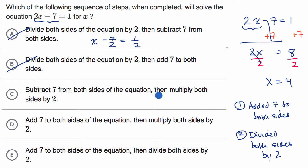Subtract seven from both sides of the equation, then multiply both sides by two. No, we added seven to both sides of the equation, and then we divided both sides by two.